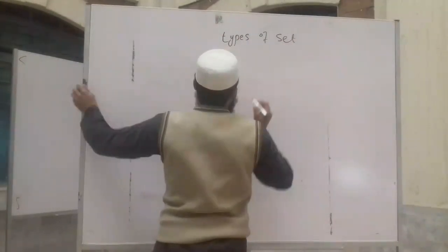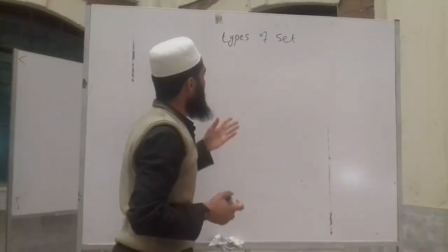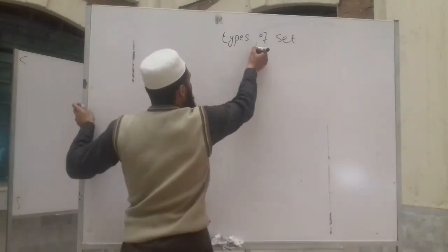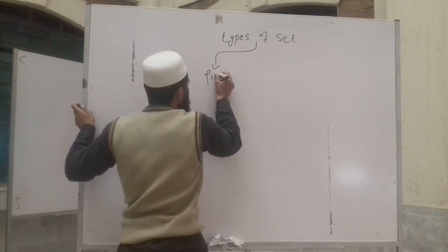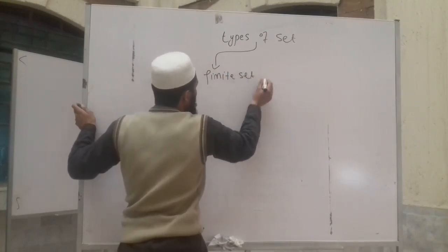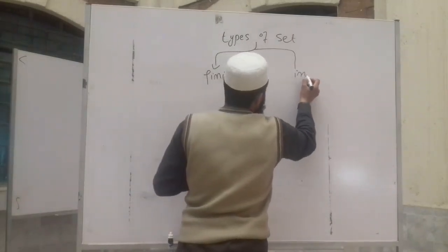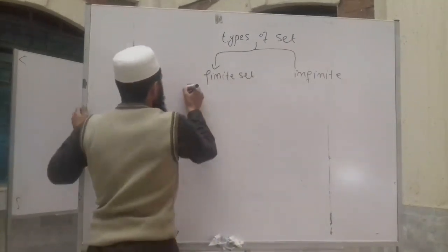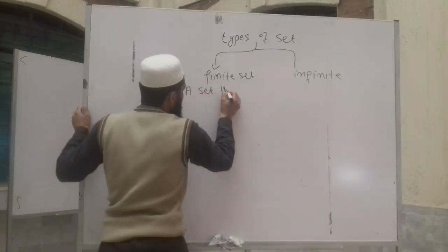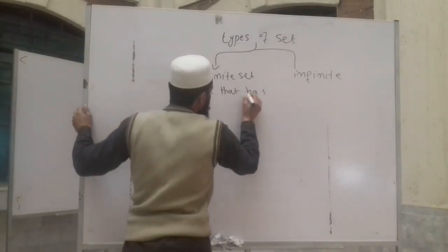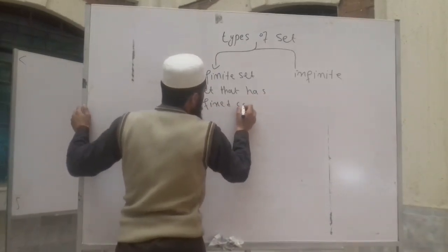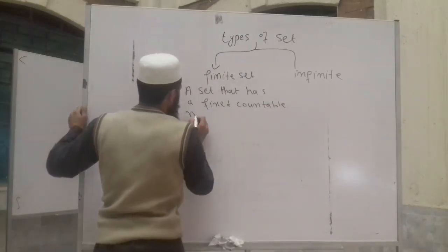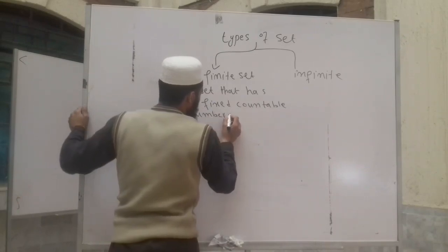Types of sets. Basically, we have two types of sets. We have finite sets and infinite sets. A finite set is a set that has a fixed, countable number of elements.